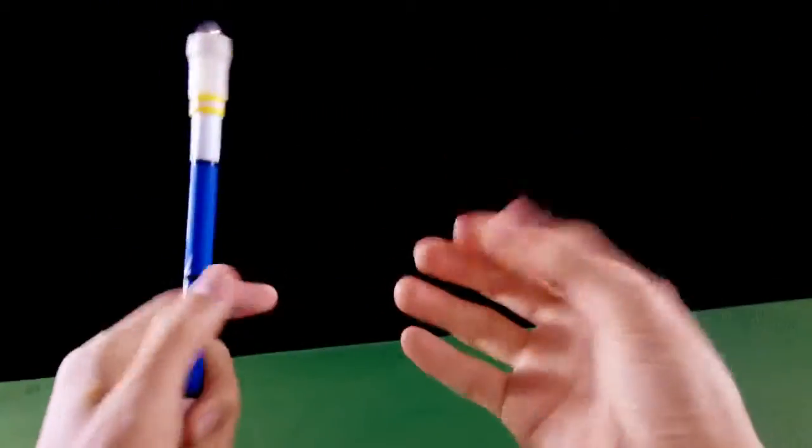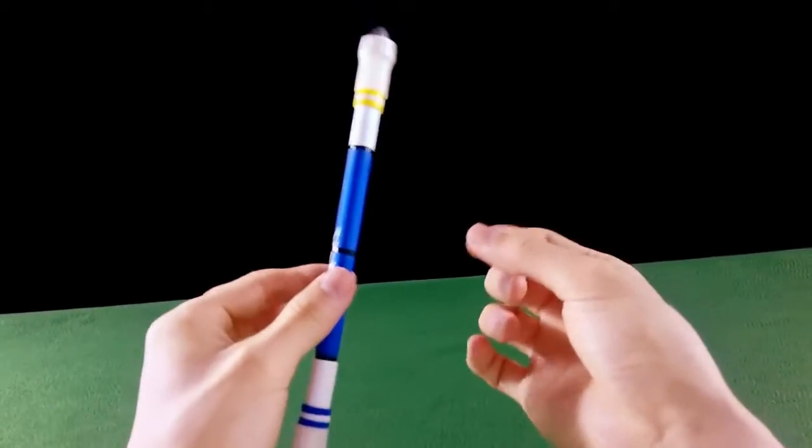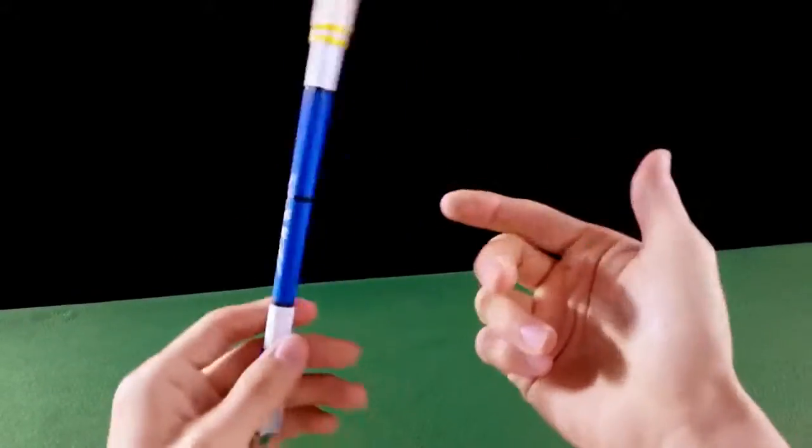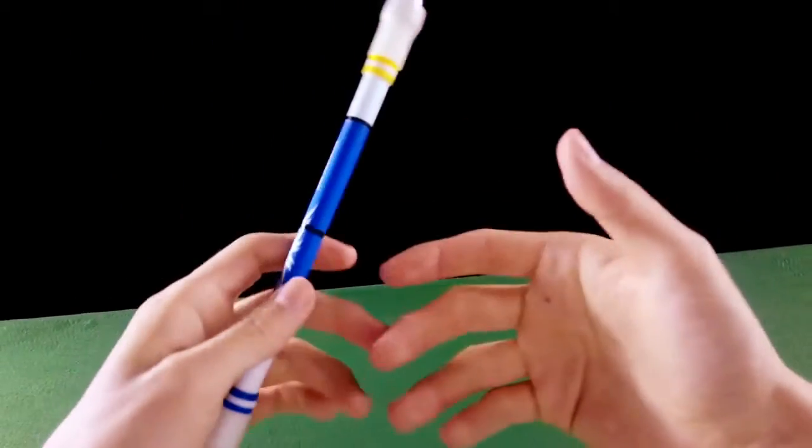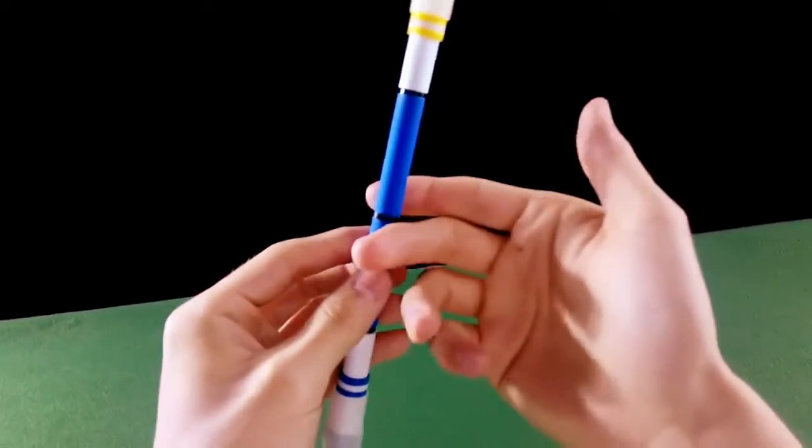You can spin the pen on the medial phalange, but the more on the fingertips, that is, on the distal phalange you spin the pen, the easier the spin will be. Why?